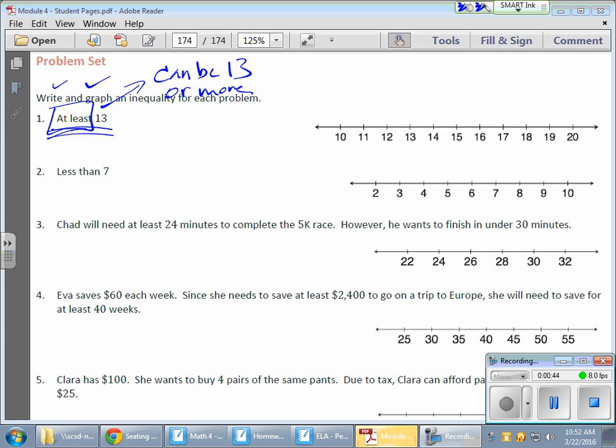If I'm including 13, I'm actually going to draw a very nice little circle here like that on my graph. It's going to be filled in to include the 13, and since it can be more, I'm simply going to take my pen and travel to the right to show that this value can be 13 or more.